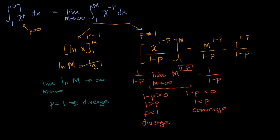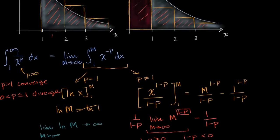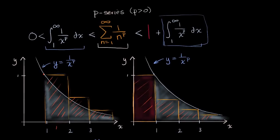So there you have it. We have established that this integral converges only when p is greater than one — in that case you converge. And if zero is less than p is less than or equal to one, you diverge. And since our p-series converges if and only if this integral converges, these exact same constraints apply to the original p-series: the p-series converges only when p is greater than one, and diverges when zero is less than p is less than or equal to one.